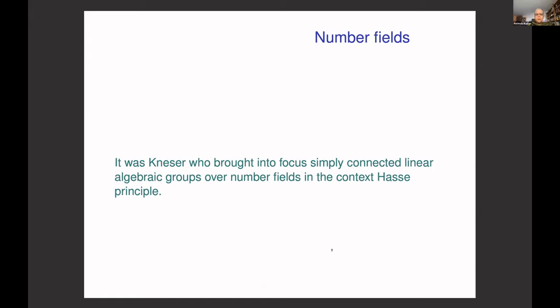It was Kneser who brought into focus the context of simply connected groups over number fields while discussing the Hasse principle. He was the first person to do so — I had some discussion with Serre on this topic, and he said that Kneser was handling the spinor genus so closely over number fields that he came to the conclusion of the following conjecture.